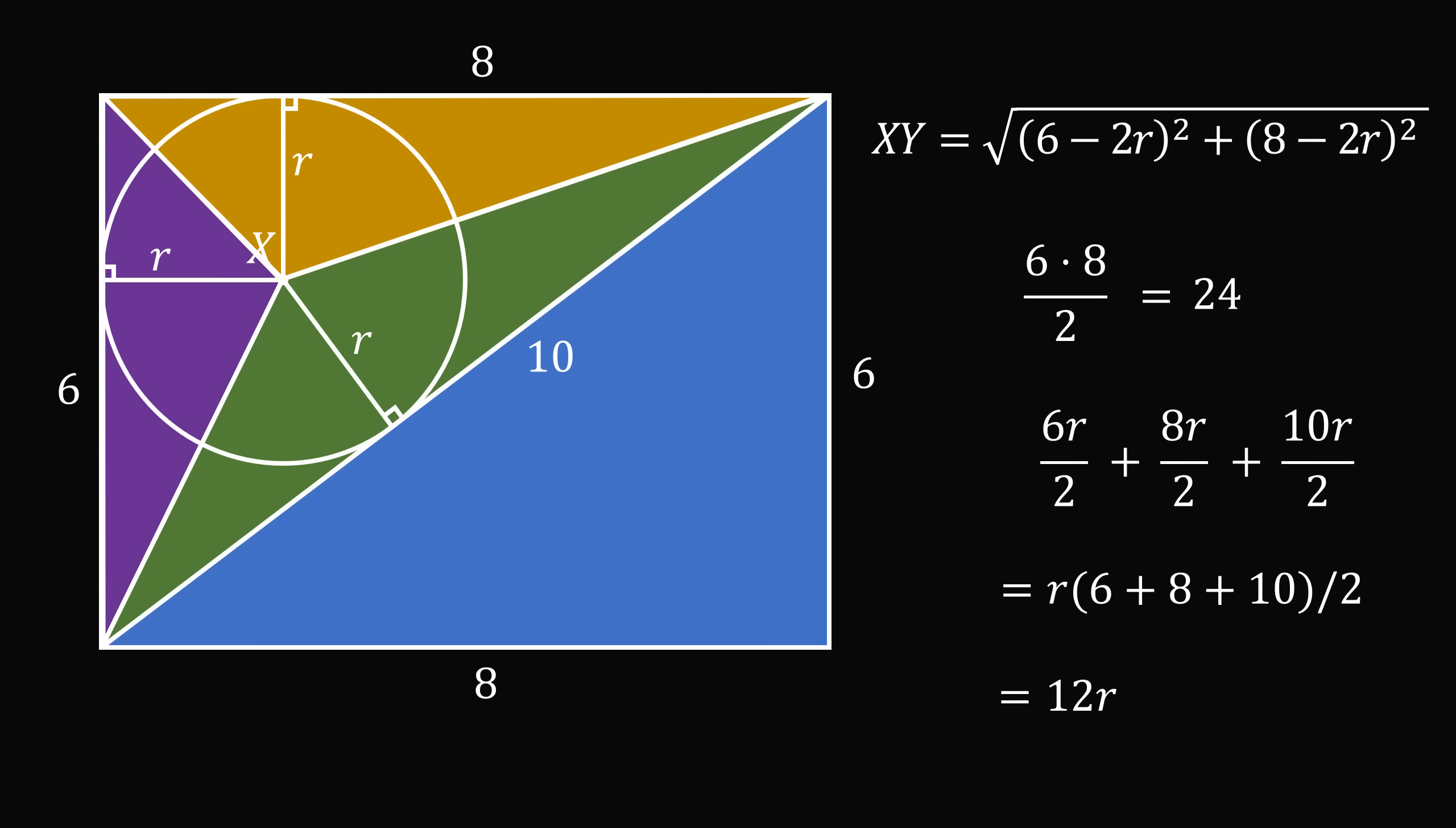This is also equal to half the area of the rectangle. Thus, we have 12R is equal to 24. We divide both sides of the equation by 12 to get that R is equal to 2.